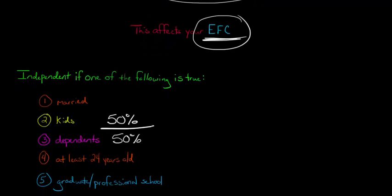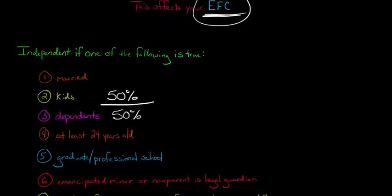Also, it is going to ask you were you born after a certain date on the FAFSA and what it is trying to drive at. Are you at least 24 years old? If you are at least 24 years old, then you are determined automatically to be independent. If you are in grad school, if you are doing a master's or in professional school like law school or medical school, then you are automatically determined to be an independent student.